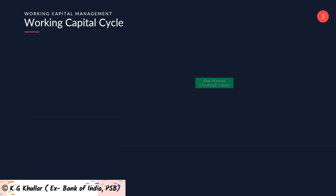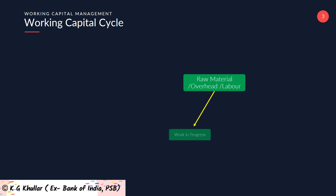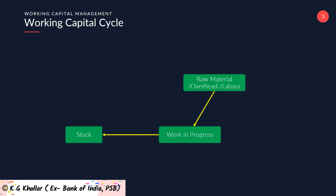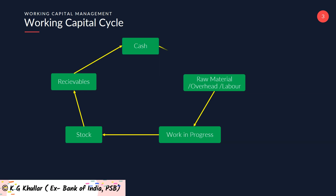Working capital cycle is a useful tool for managing working capital. It basically indicates the length of time between a company's payment for materials entering into stock and finally receiving the cash from sales of finished goods.